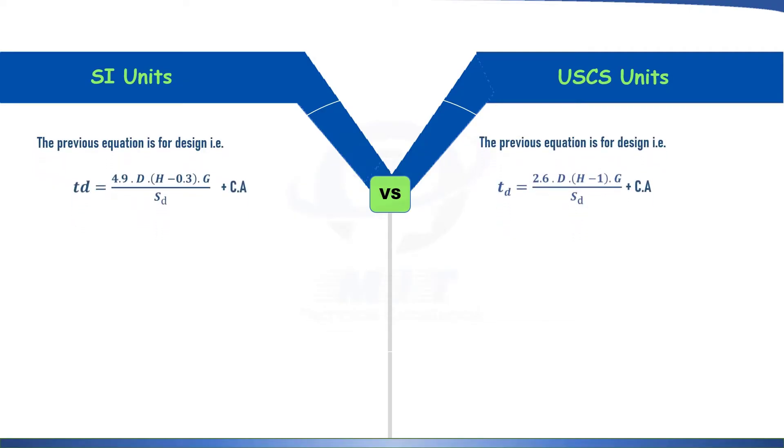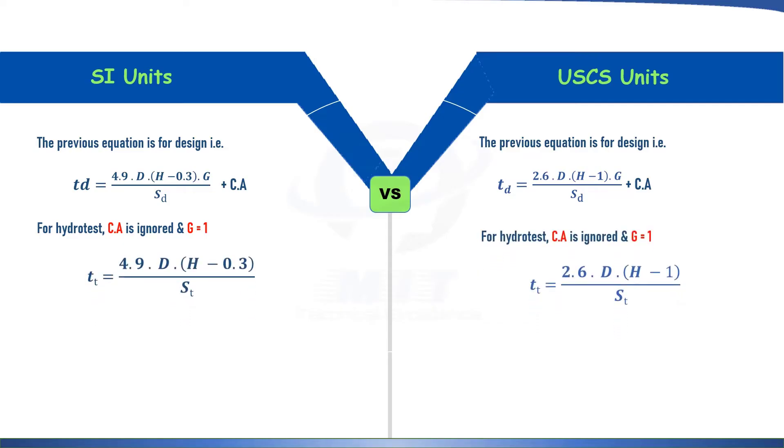And the equation provided in the previous slide is for design condition. So stress S is equal to SD which is stress at design condition. Now for hydro test condition or test condition, we have to ignore corrosion allowance because it is in new condition, there is no corrosion for hydro test. And because we are conducting the test with water, specific gravity of the liquid is 1. So again rearranging, G will cancel out from the equation and there is no corrosion allowance for hydro test. We will get this equation of 4.9 times D H minus 0.3 over stress ST. Now this one is different from SD. SD is stress at design temperature and ST is equal to stress at test temperature. And similarly for USCS unit thickness at test temperature is 2.6 times diameter times H minus 1 over ST.